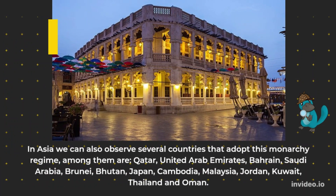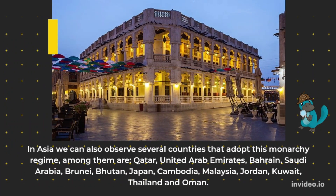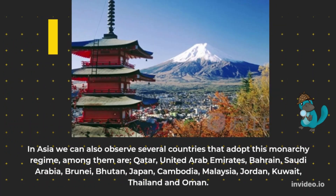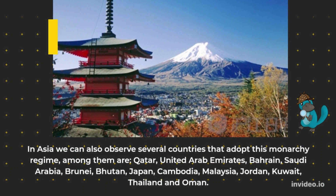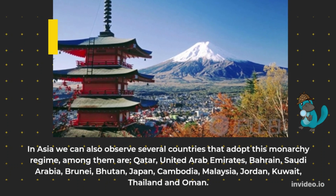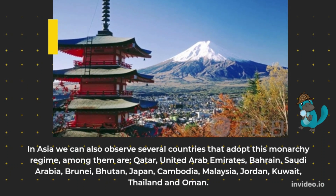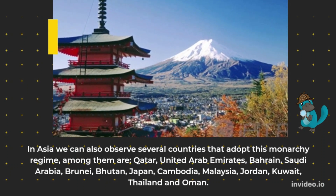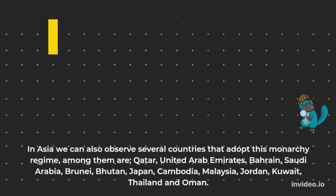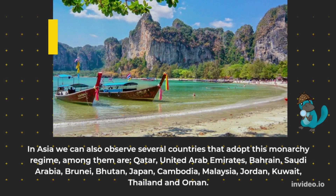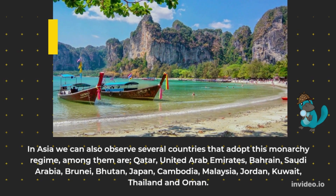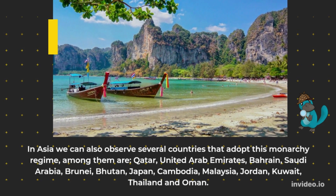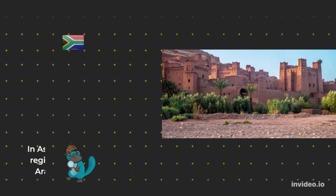In Asia, several countries also adopt the monarchy regime. Among them are Qatar, United Arab Emirates, Bahrain, Saudi Arabia, Brunei, Bhutan, Japan, Cambodia, Malaysia, Jordan, Kuwait, Thailand, and Oman.